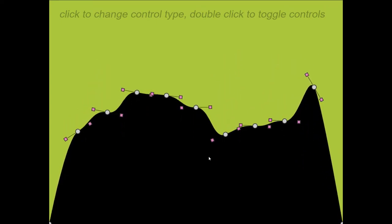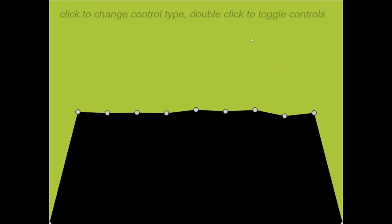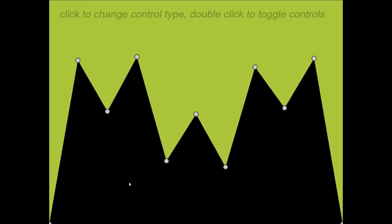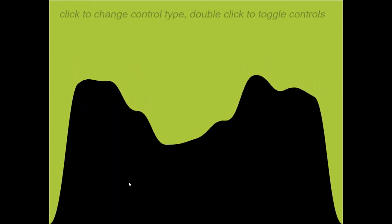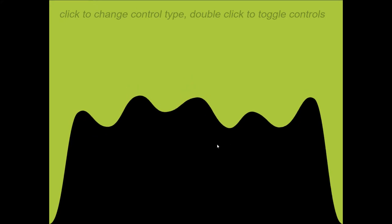If you click on it, then you can get more angular, sharp, mountainous shapes. And if you double-click on it, you can hide the bezier curves.